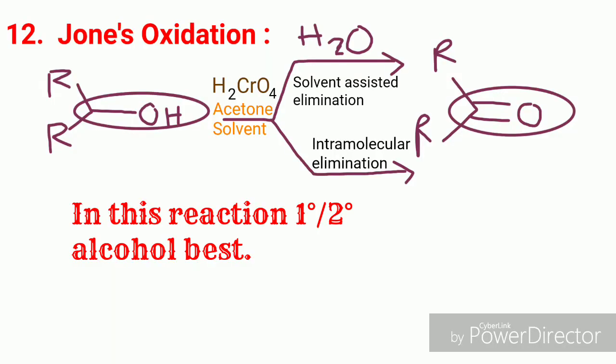Now, this is a very important reaction: Jones oxidation. In this reaction, a primary or secondary alcohol is used as the reactant. The CHOH group is converted to the corresponding carbonyl group (C=O) by chromic acid in acetone as a solvent. Two types of elimination occur: one is solvent-assisted elimination by H₂O, and the other is intramolecular elimination, both giving the same product.